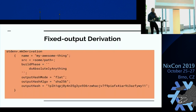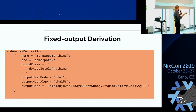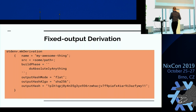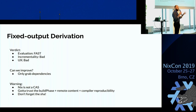The very first approach is the fixed output derivation. If you don't want to spend any time thinking about it, you do that. You run a command — it can do anything, call the network, fire missiles, everything you want — and you just tell Nix: the output is going to have this hash, trust me on this. If the output actually has the exact hash, Nix will go with you. Even though it's the simplest to implement, it has a few drawbacks.